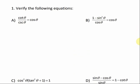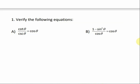Let's verify the following equations. In part a, we have cotangent of theta divided by cosecant of theta equals cosine of theta. The simpler side is the right side, so let's simplify the left side to look like it. Following the strategy of expressing everything in terms of sine and cosine: cotangent equals cosine of theta over sine of theta, and cosecant of theta equals 1 over sine of theta.